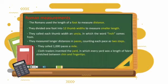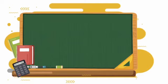Cloth traders invented the yard, in which every yard was a length of fabric stretched between chin and fingertips. Because people differ in the sizes of their body parts, the measurements they got resulted in confusion and disagreements. Thus this led to the birth of the English system and the metric system of measurement. All these systems and standards are agreed upon and understood by experts all over the world.